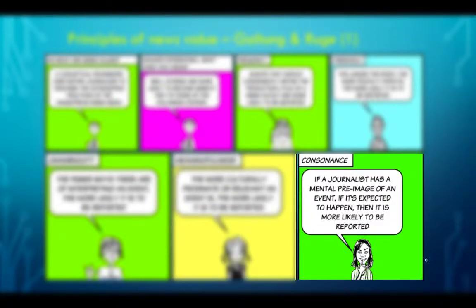Consonance. If a journalist has a mental pre-image of an event — if it's expected to happen — then it is more likely to be reported. Journalists are human beings and like all human beings, we like to have schedules, routines and patterns. So if there are recurrent events, reporters are more likely to cover these events because they know what to expect, and therefore they can be prepared to cover these events and provide better work.